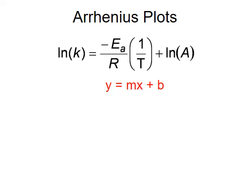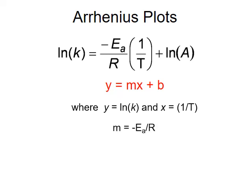Here, y equals the natural log of k, the rate constant, and x is the inverse of temperature in Kelvin. The slope, m, is equal to the negative of the activation energy divided by R, and the y-intercept is the natural log of the frequency factor.